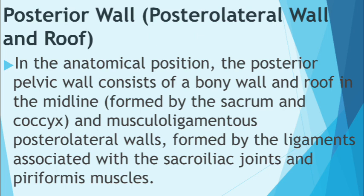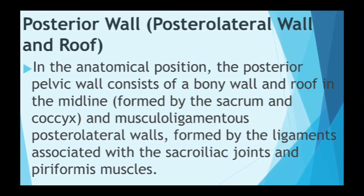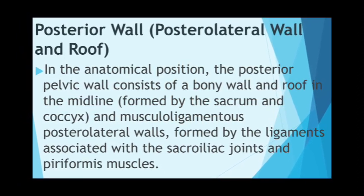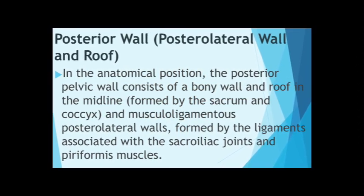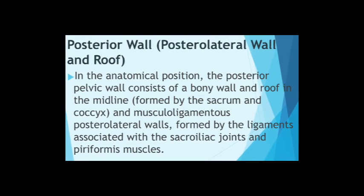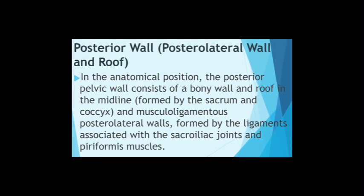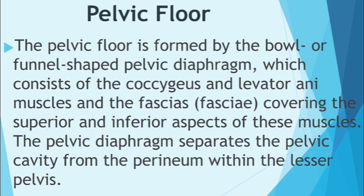The piriformis muscles form the posterior lateral walls of the pelvic cavity. Immediately anterior and medial to the piriformis muscles lie the nerves of the sacral plexus, embedded in the fleshy fibers of the piriformis. Piriformis syndrome can therefore affect these nerves, causing pain along their distribution. A gap at the inferior border of the piriformis muscle allows passage of neurovascular structures between the pelvis and the lower limb.